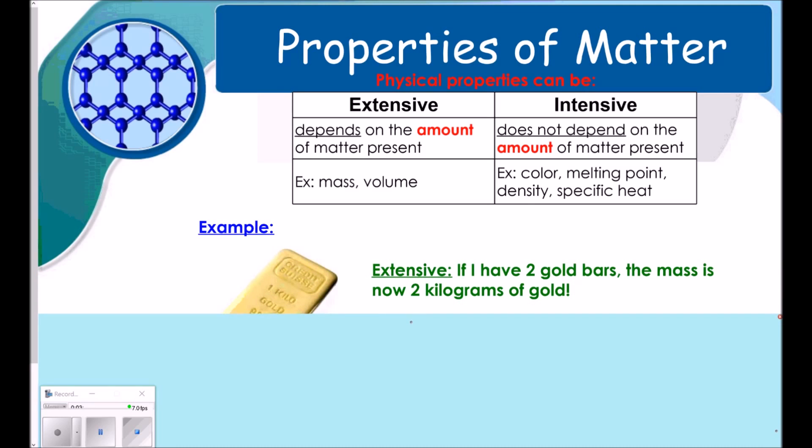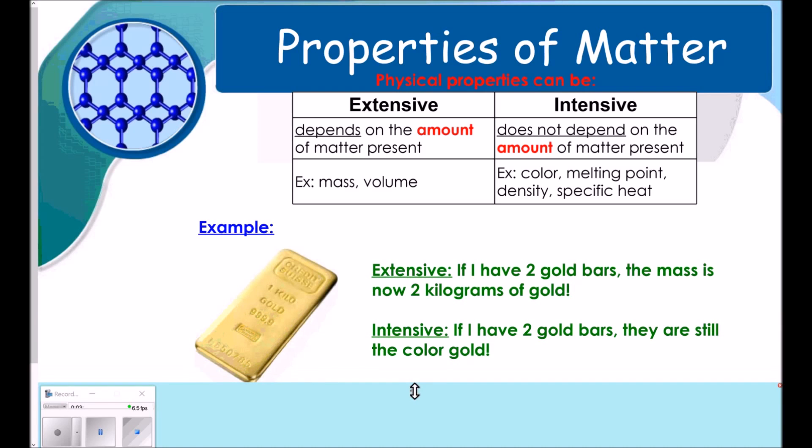Okay, extensive. If I have two gold bars, the mass is now two kilograms of gold. So, it's changing with the amount. But if I have two gold bars, they're still the color gold. That does not change, so it's intensive.